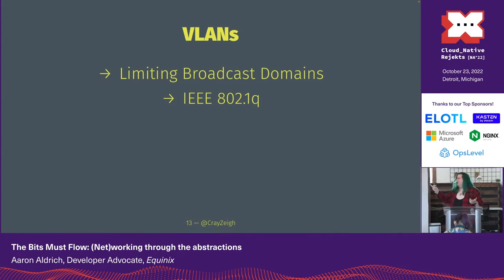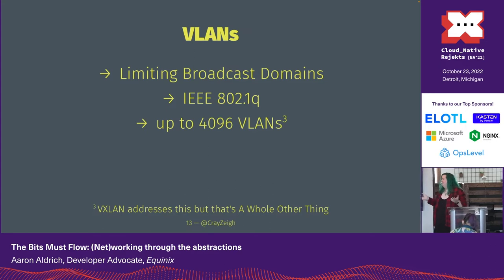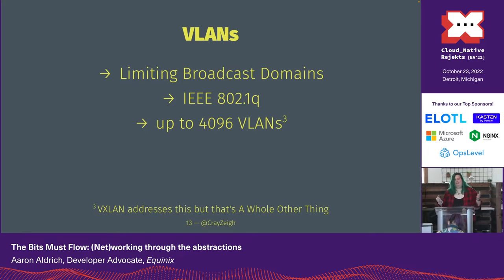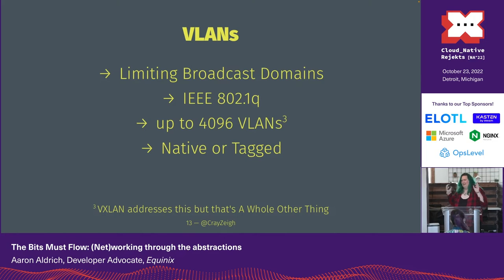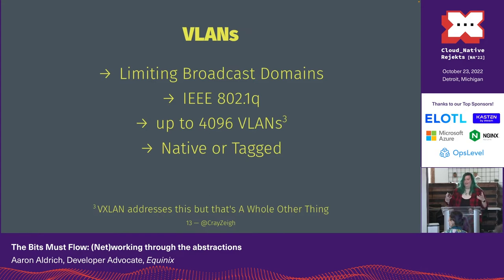The IEEE 802.1Q standard handles VLAN tagging, replacing an older Cisco-specific approach. It supports up to 4,096 VLANs because that's how many bits you have to identify them — there's just no more space. VXLAN operates at layer three and gives tens of thousands of VLANs with different underlying technology, but the same idea: some systems are local to each other, others are not. You can tag traffic so multiple VLANs travel over the same physical port on uplinks.